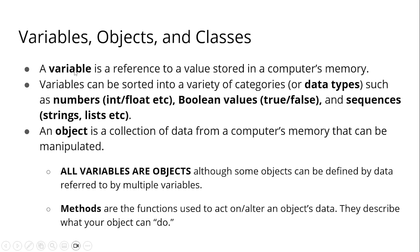Variables are the things that we declare. Variables can be sorted into a variety of categories or data types, such as numbers. For numbers, we declare as int or integer, and float for those with a decimal. Next is boolean values. Boolean values only have two values, which is true or false.